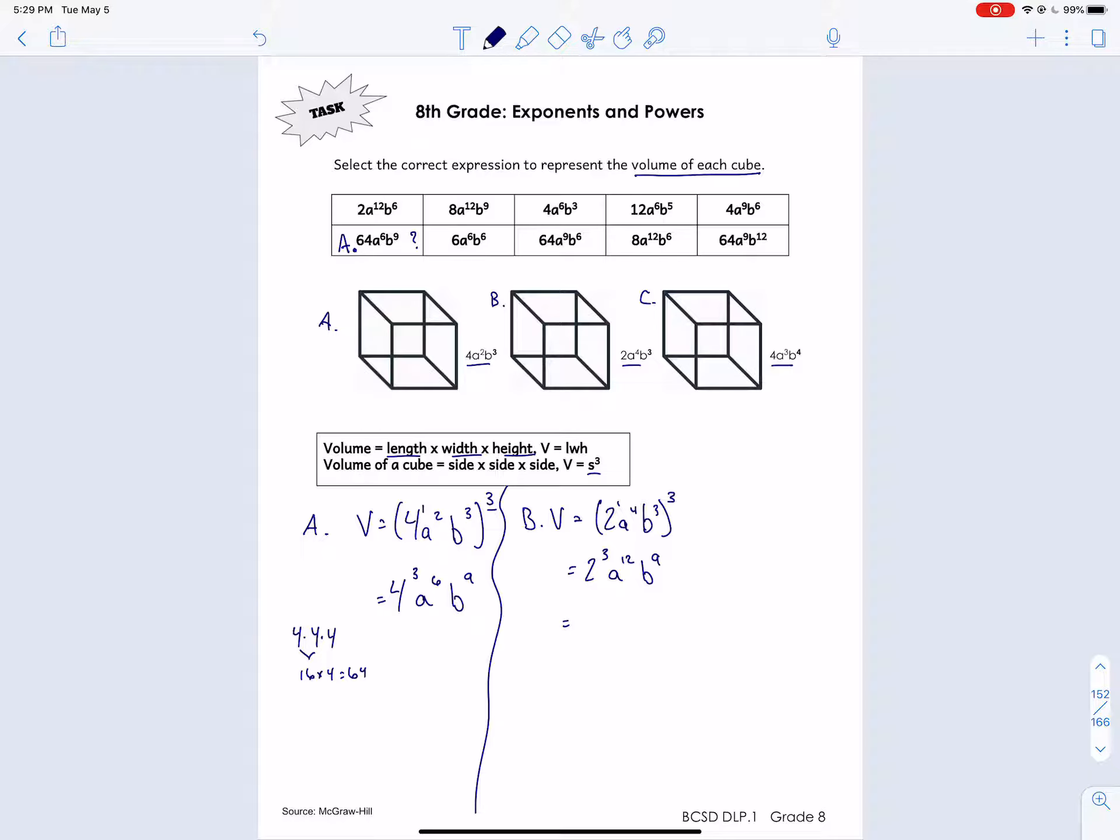Okay, so 2 to the 3rd power. So it looks like none of these numbers are in exponent form, so the beginning number. 2 times 2 times 2. 2 times 2 is 4, times 2 is 8. So 8 A to the 12th B to the 9th. Let's see if we have that. So 8, I'm looking for 8. Here's 8, A to the 12th, B to the 6th. That's not it. Here we go, B to the 9th. And so that one is for cube B.